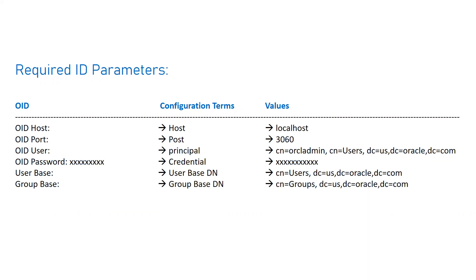When you go to OID — which I'll show on the next screen — you'll get clarity on this. A default user base is created with the name 'cn=users', and the rest depends on the configuration done at installation. In my case it is 'dc=us, dc=oracle, dc=com' because I used a real name when installing my OID. This is a customizable setting at installation time. You will receive this information from the security team when configuring the external LDAP server.